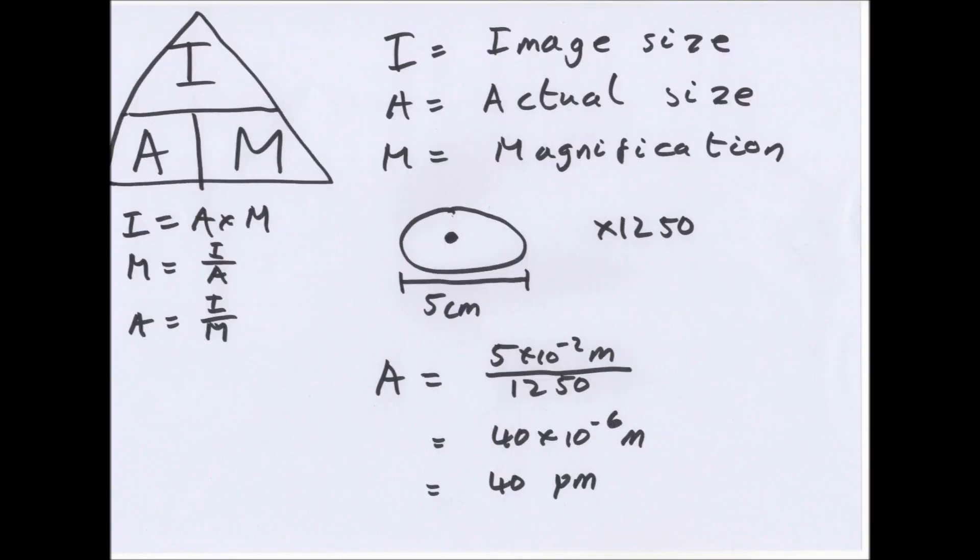And one of the only calculations you need to know at the AS level is image size, actual size, and magnification. You see a little formula triangle. To work out image size, you times actual size and magnification together. Magnification is image divided by actual size, and actual size is image divided by magnification. And here's an example.